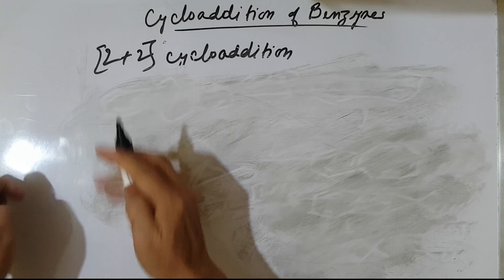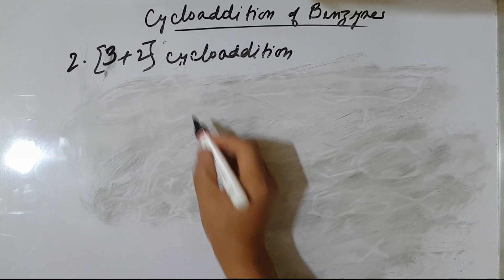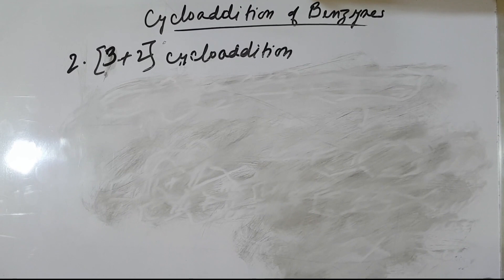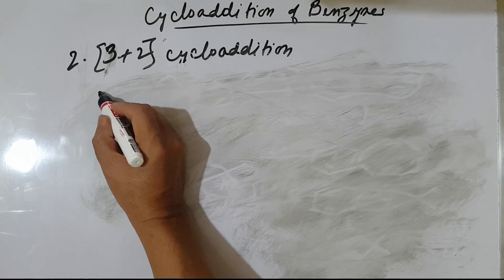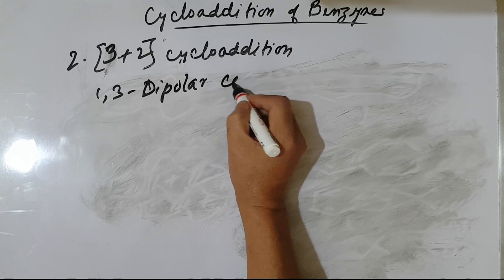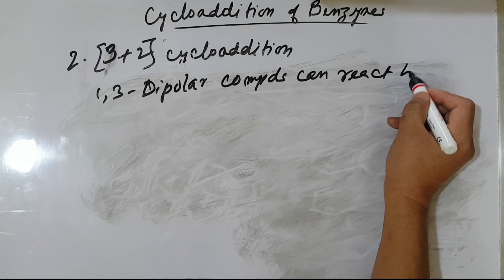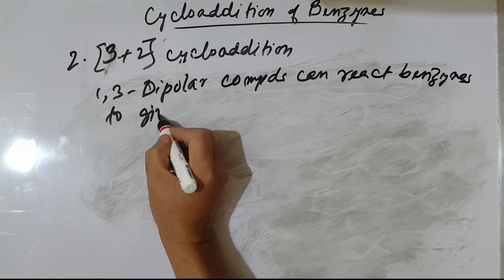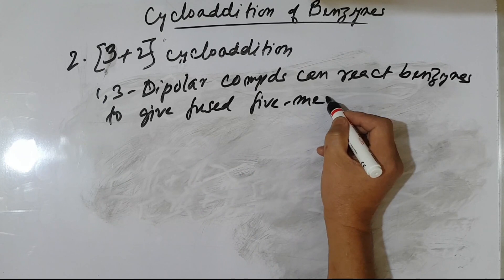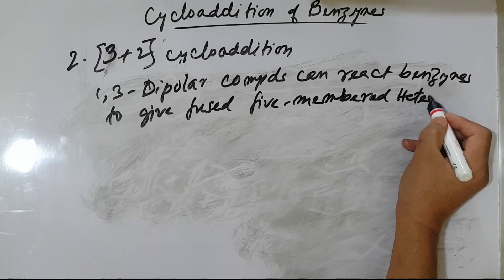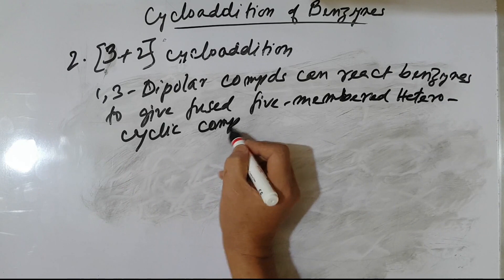Now, the 1,3-dipolar 3+2 cycloaddition reactions. Benzynes can also react with certain 1,3-dipolar compounds. Benzynes do give fused 5-membered heterocyclic compounds from these 3+2 reactions.